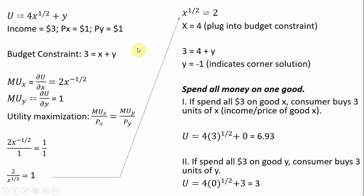Plugging X equals 4 into our budget constraint, we get Y equals minus 1. And the minus 1 indicates we have a corner solution. So which good should we spend all our money on, good X or good Y? That's what we're going to find out now.